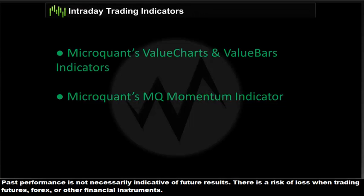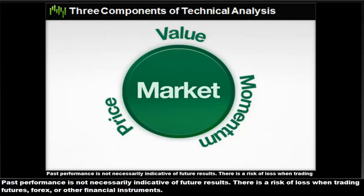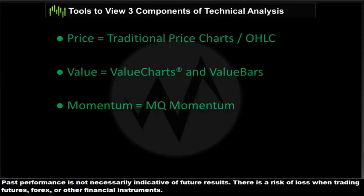We trade these equity options intraday with Microquant's proprietary Value Charts and Value Bars indicator, and also the MQ Momentum indicator. Before talking about the indicators, I want to touch on what we believe are the three most important components of technical analysis: price, value, and momentum. Combining all three provides the most complete view of the current makeup of the market. For price we use traditional open-high-low-close bar charts. For value, we use Value Charts and Value Bars. For momentum, we use our MQ Momentum indicator.